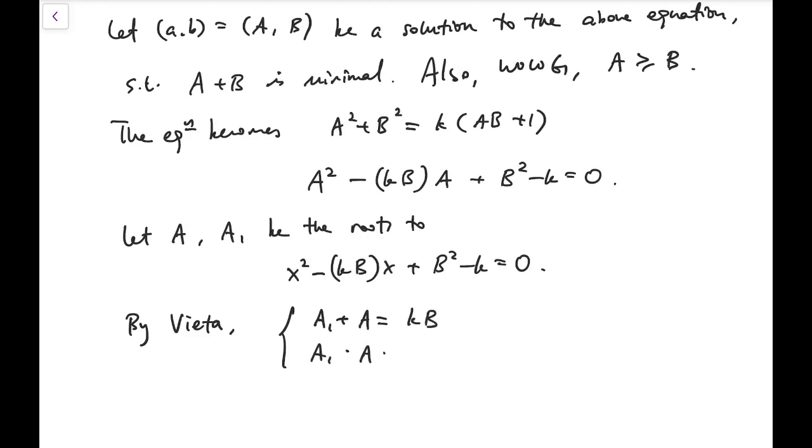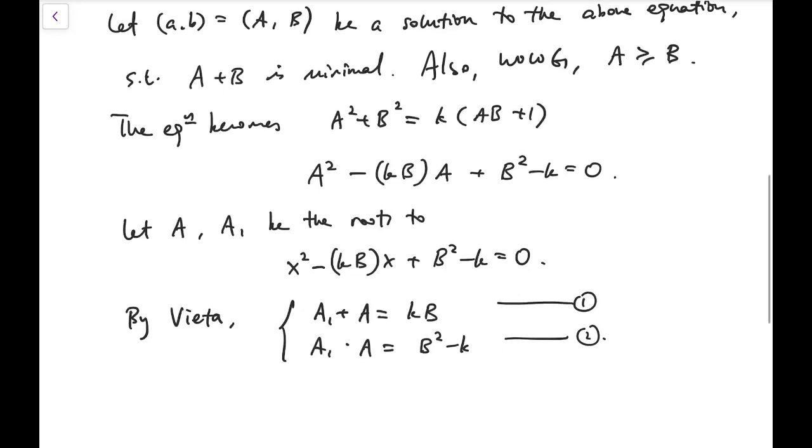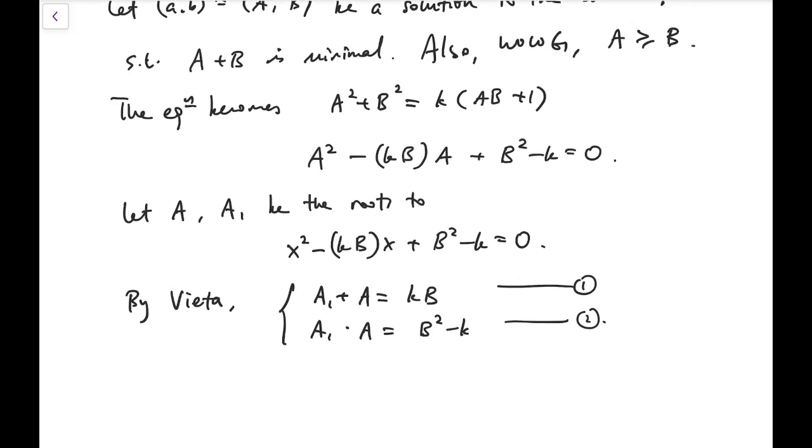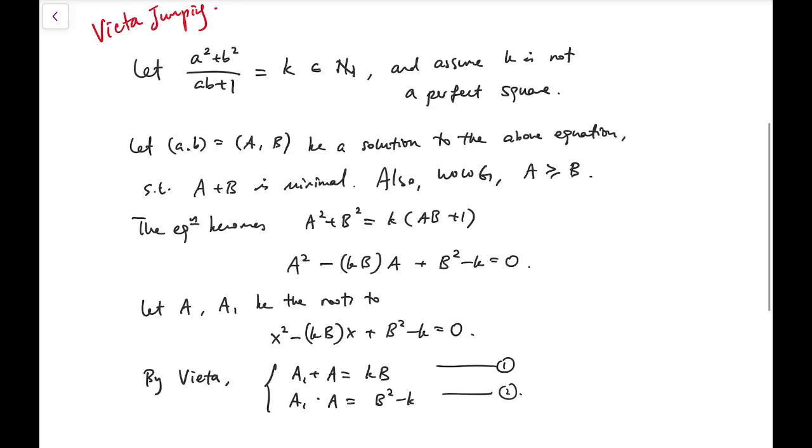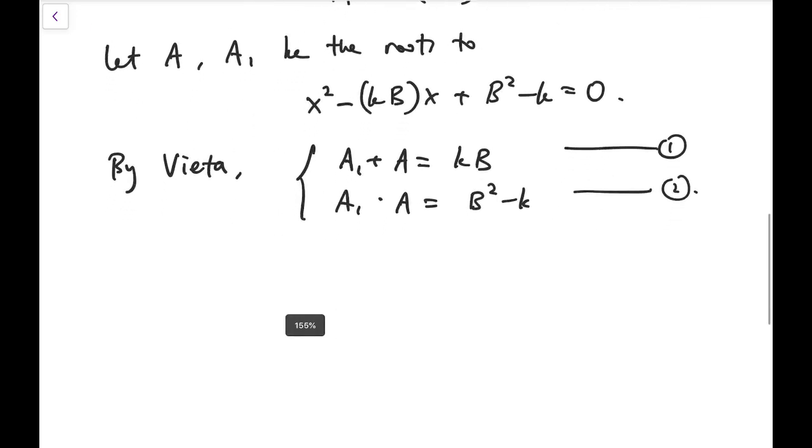The sum of roots should be kB and the product is B squared minus k. The aim of using Vieta's formula is to show that this A1, the second root, is not just simply the root of this quadratic equation, but also a valid solution to the original expression. In other words, I'm going to show that this big A1 is a positive integer.